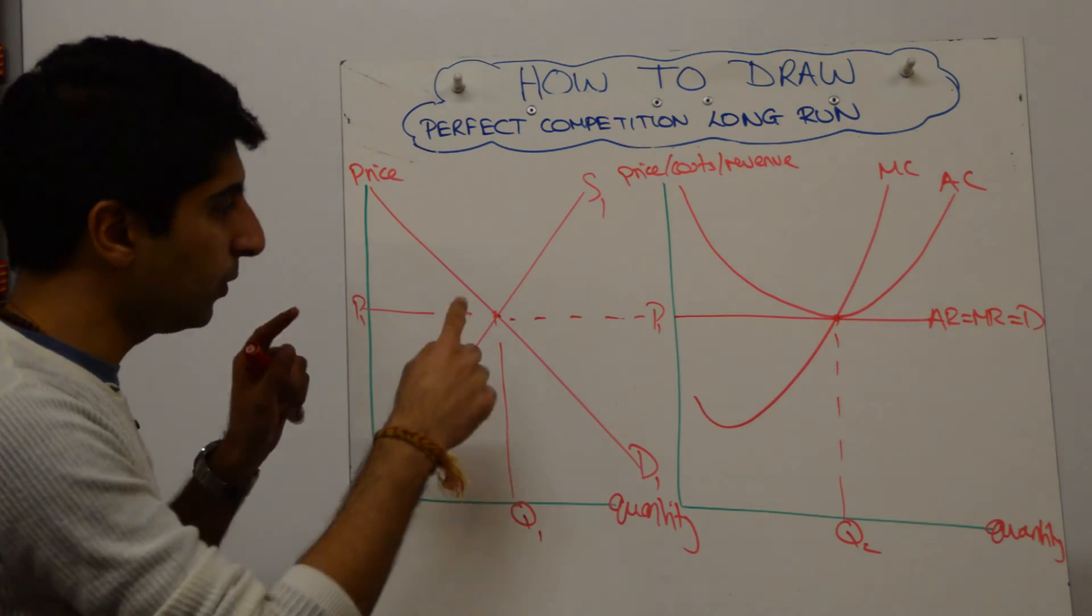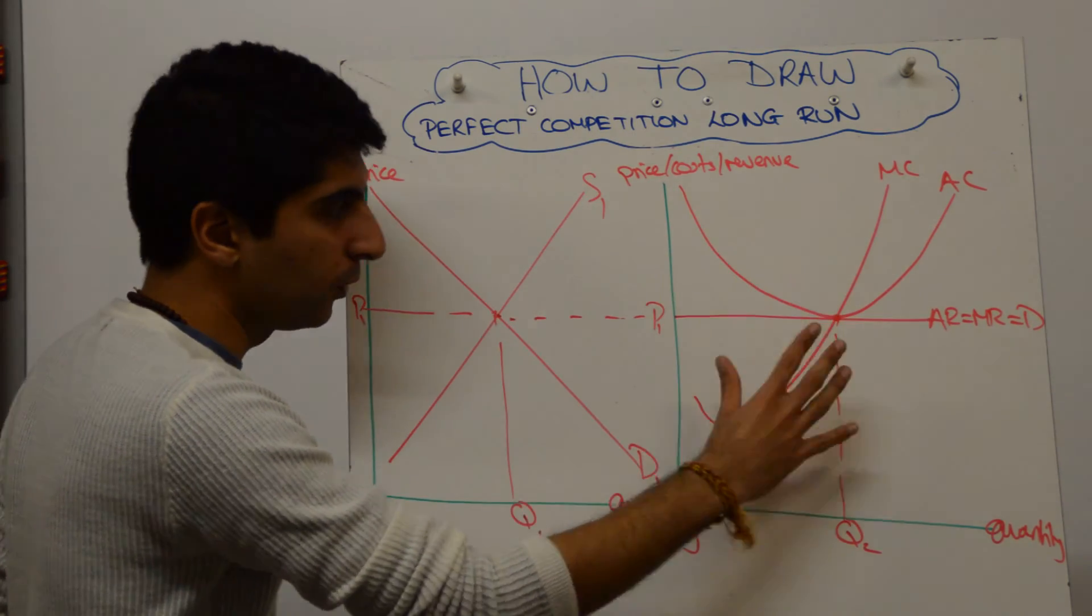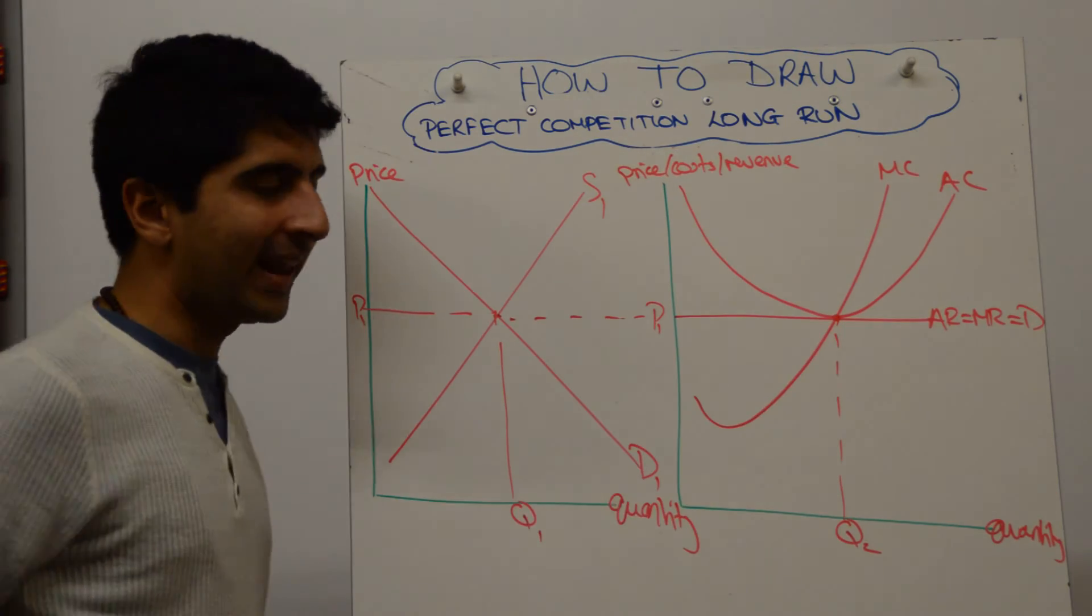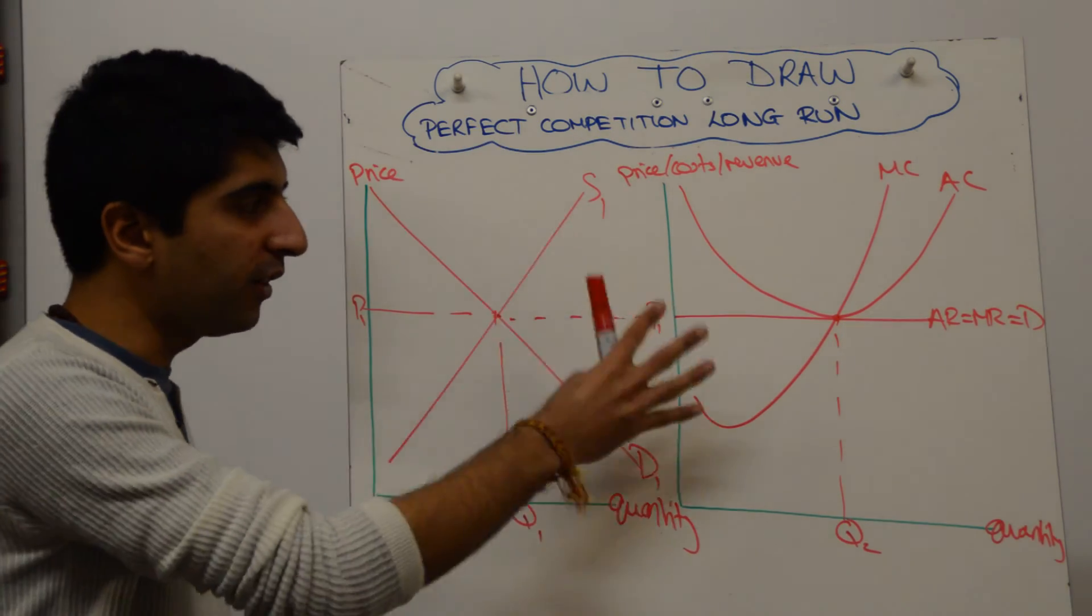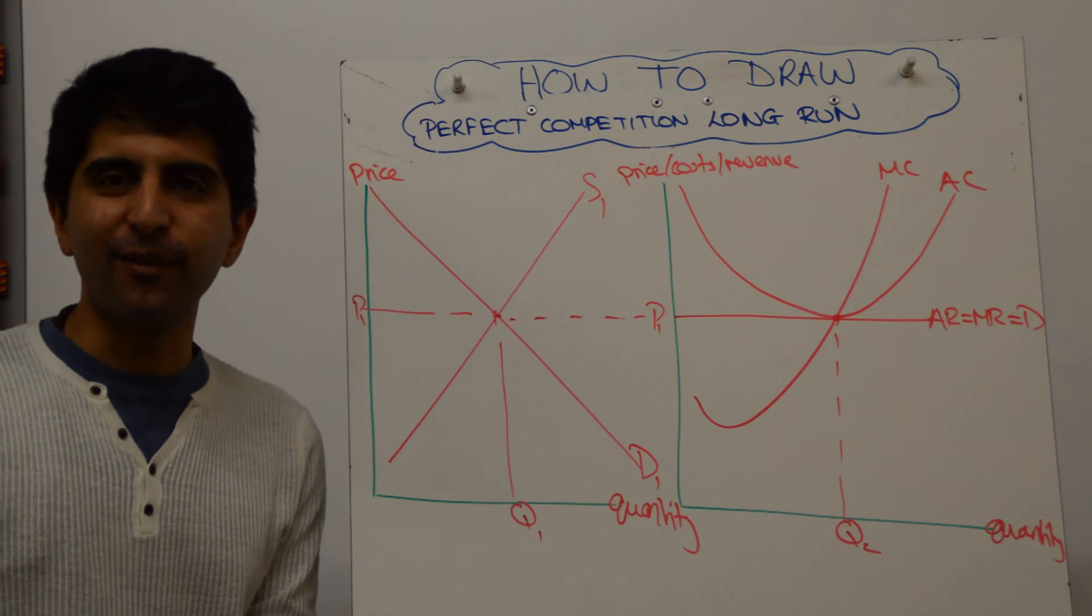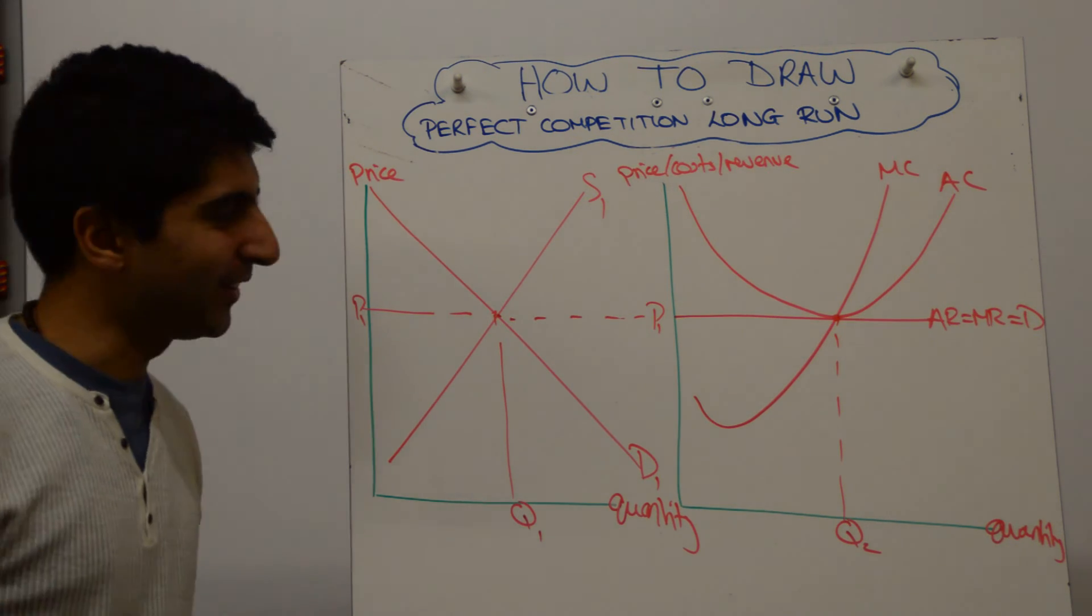Have we labelled our equilibrium? Yes, we have, both in the market and also for the individual firm. This is the long run position, showing normal profit and allocative efficiency. Worth learning how to draw that, practice drawing all these diagrams. You've got to love it, right? It's economics. Thanks for watching, guys. See you next time.